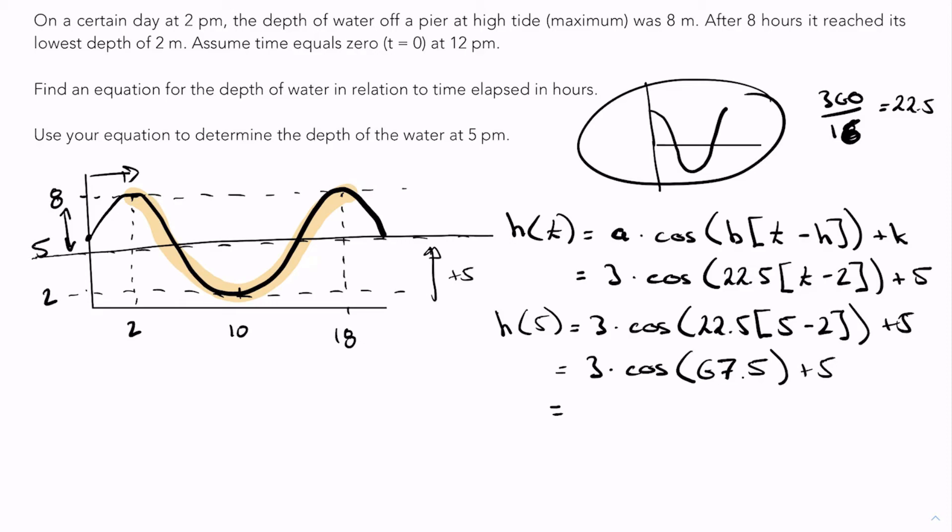Let me just take a look here at what we get. It's going to give me 3 times 0.382 plus 5, which will give me 6.14. And there we go.